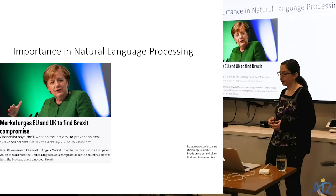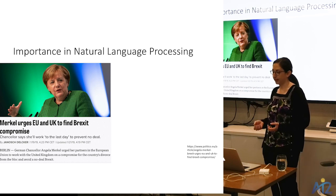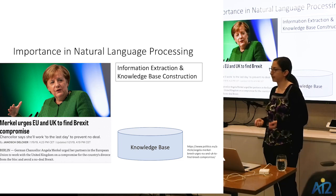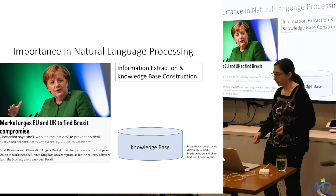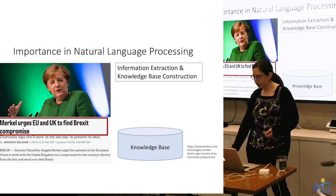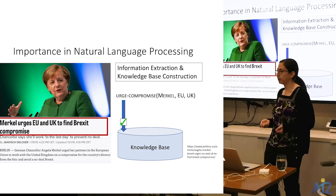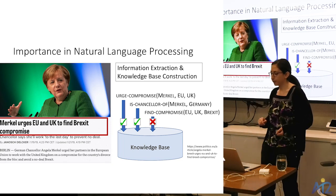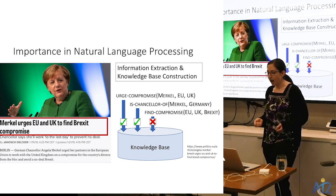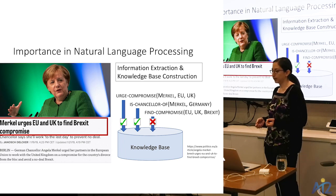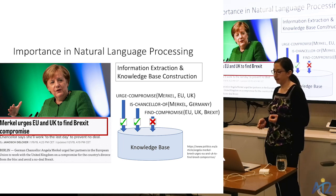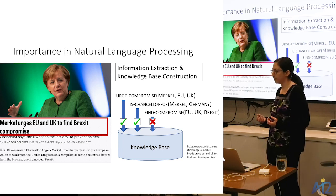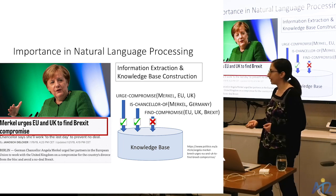From an applied NLP perspective, event factuality is useful for information extraction. Given a document like 'Merkel urges the EU and UK to find Brexit compromise,' an IE system might extract various relations — an 'urge compromise' relation between Merkel, the EU and UK, and a 'find compromise' relation. But we wouldn't want to enter the 'find compromise' relation into a knowledge base because it didn't actually happen based on the meaning of the text. Event factuality prediction is useful for determining whether to enter extracted relations into a knowledge base.